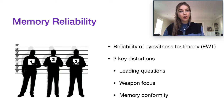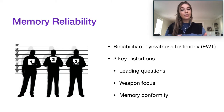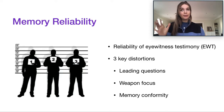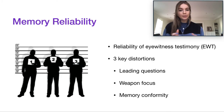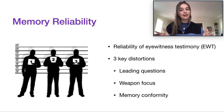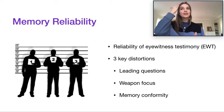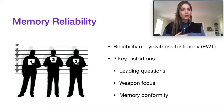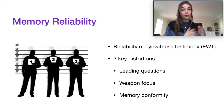Distortions are basically errors that can happen in the creation of a memory — for example in the encoding process when you are creating a memory, or in the retrieval process when you're trying to recall a memory later on. Leading questions are when the language used to question a witness about events they saw actively affects how they remember and recall it. Weapon focus is the concept that if a weapon is used in a crime, the witness's attention is likely to focus on the weapon, meaning their attention isn't focused on the actual perpetrator.